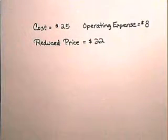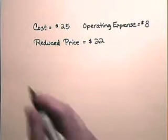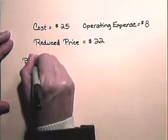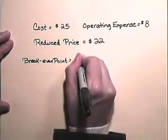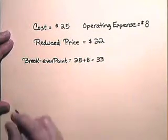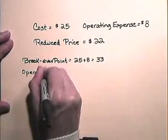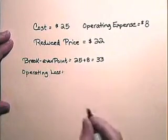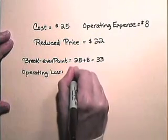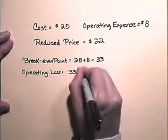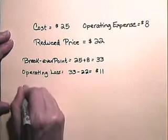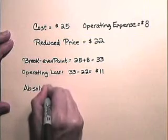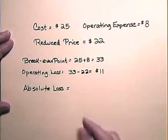Now let's look at an item for which the cost is $25, operating expenses $8, and it's being sold for a reduced price of $22.00. The break-even point is cost plus operating expenses, which is $33.00. The operating loss will be the break-even point minus the reduced price, which is $22.00, so the operating loss is $11.00.